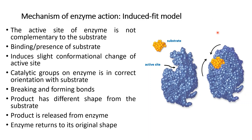When the enzyme-substrate complex is formed, the substrate reaches the transition state, which is the least stable state. The bonds between molecules of the substrate break, and new bonds are formed, producing the products. The product has a different shape from the substrate. Once produced, the product is released from the active site of the enzyme, and the enzyme returns to its original shape and can then participate in the next chemical reaction.